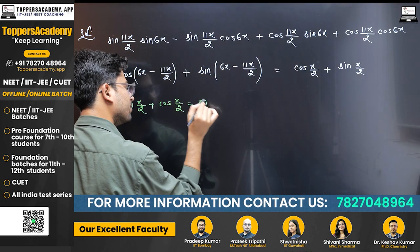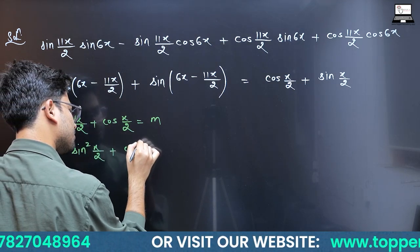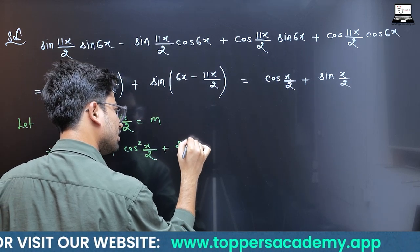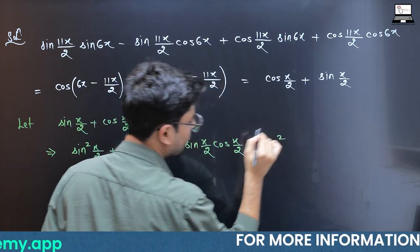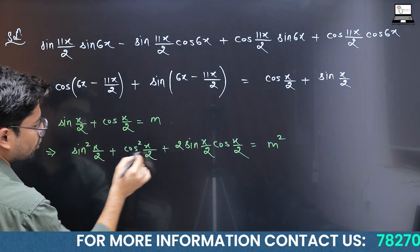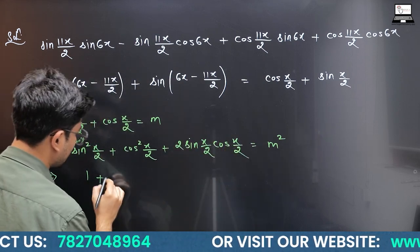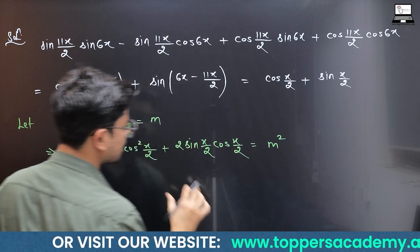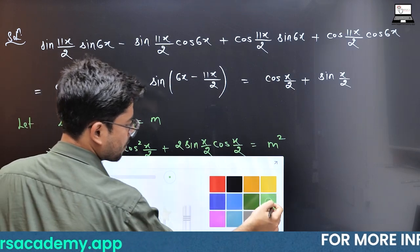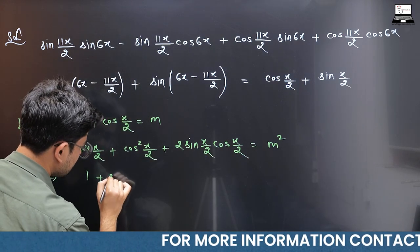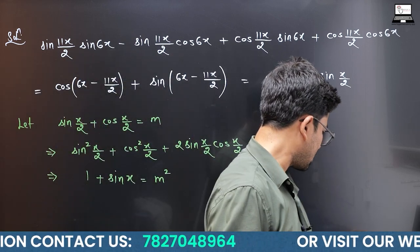Let sin(x/2) + cos(x/2) = m. Squaring both sides: sin²(x/2) + cos²(x/2) + 2·sin(x/2)·cos(x/2) = m². Since sin² + cos² = 1 and 2·sin(a)·cos(a) = sin(2a), we get 1 + sin(x) = m².